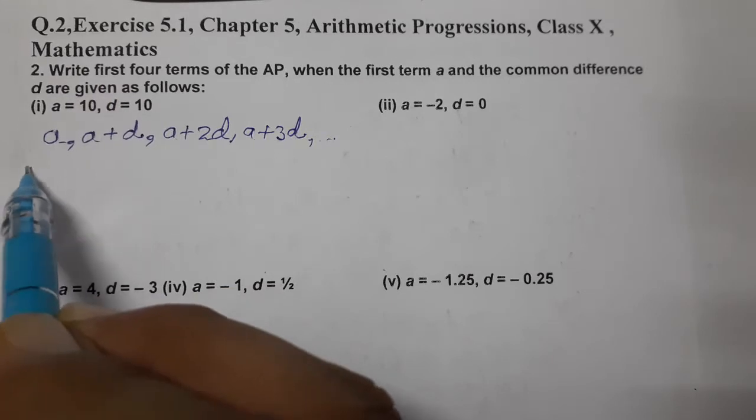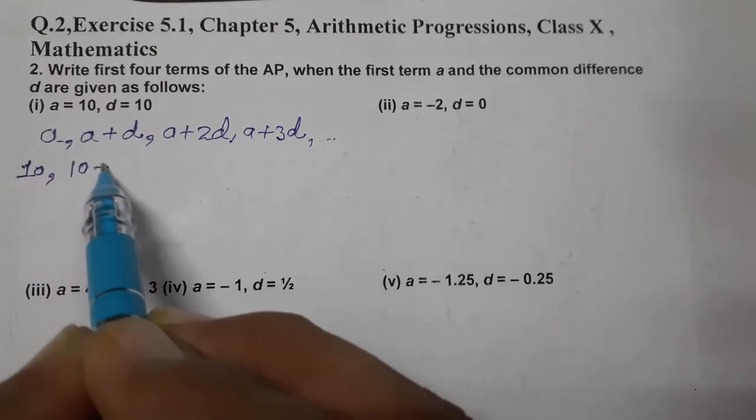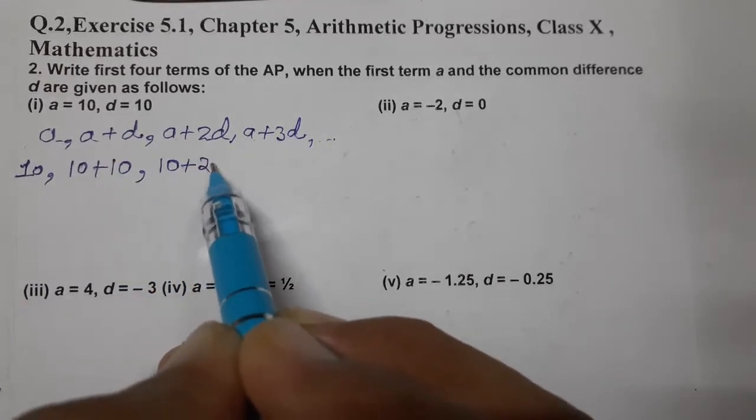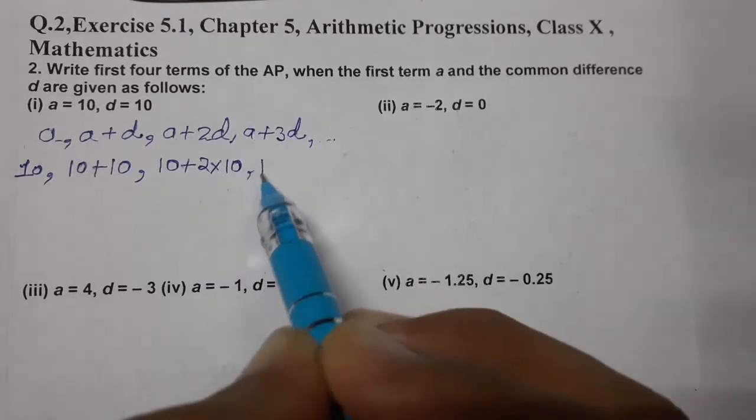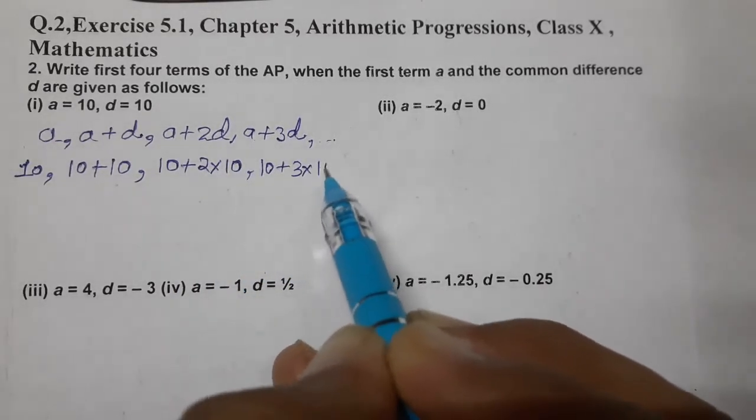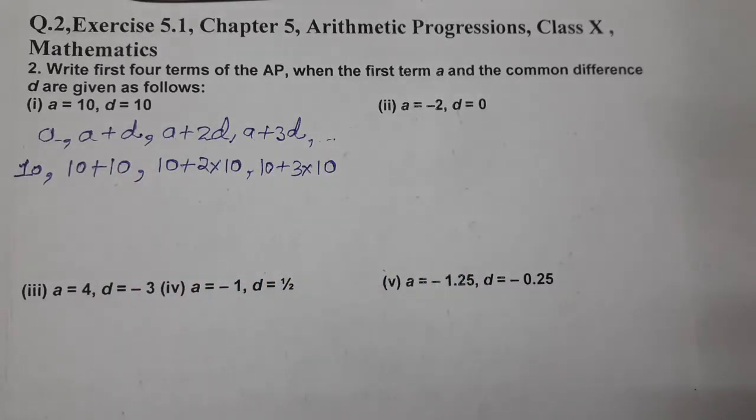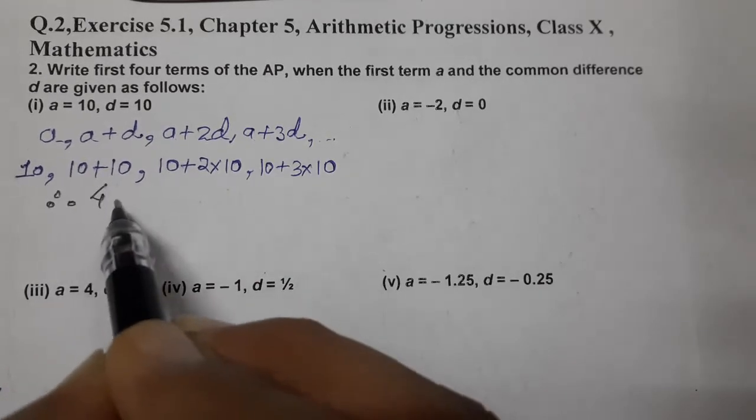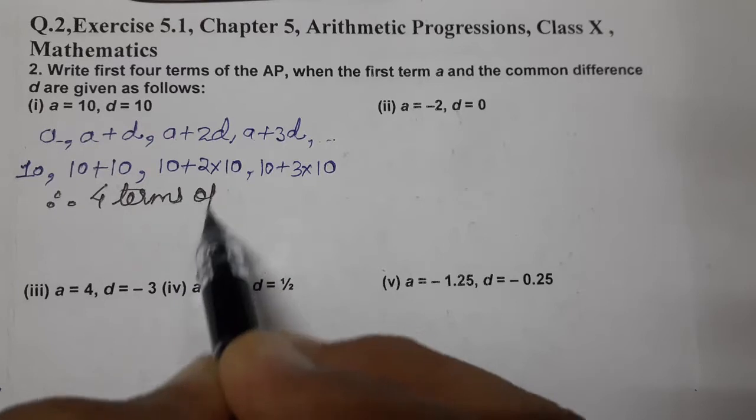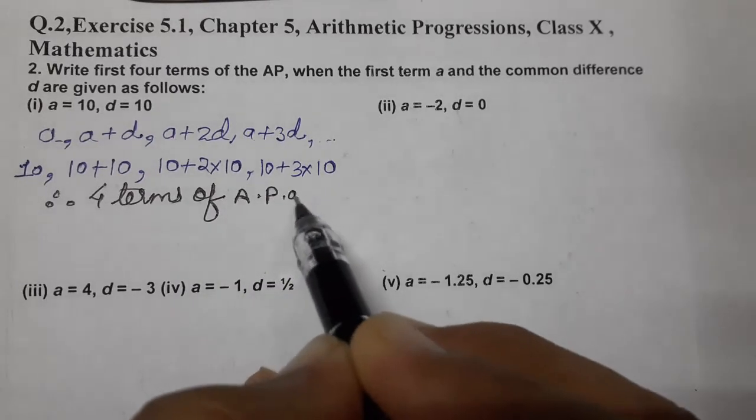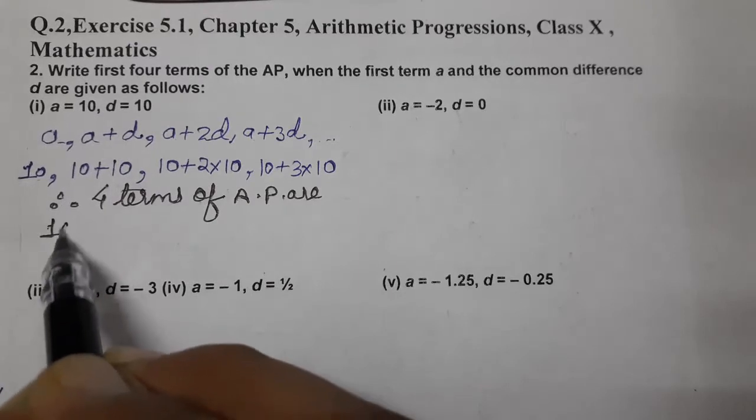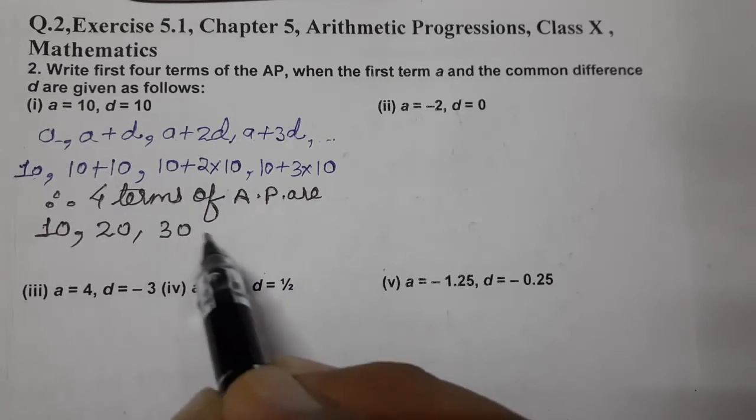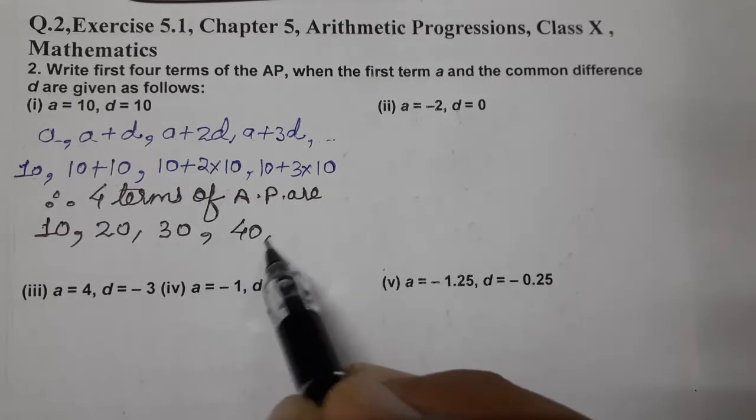A kitna hai, 10, so 10, 10 plus D, D kitna hai, D bhi 10 hai, 10 plus 10, 10 plus 2D, 2 into 10, 10 plus 3 into 10. So, AP ke 4 terms hain, therefore 4 terms hain, first hain 10, second hain 20, 30 and 40. These are the 4 terms of the AP.